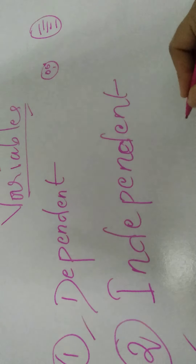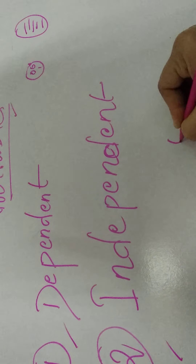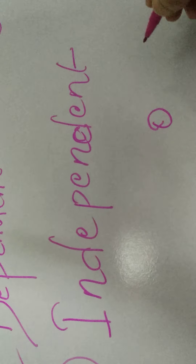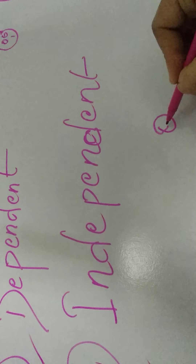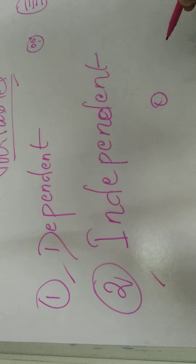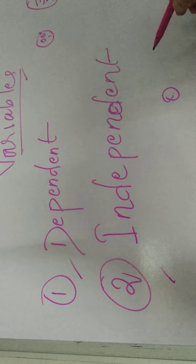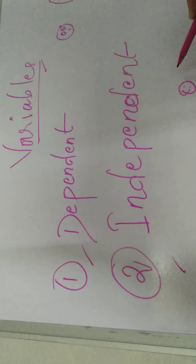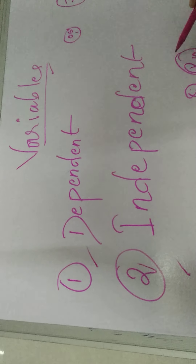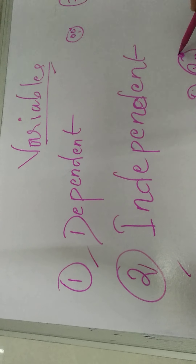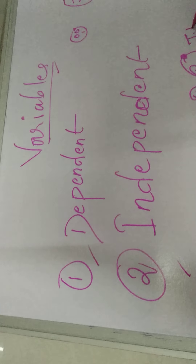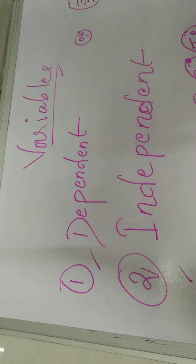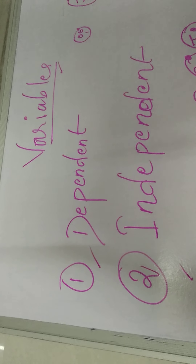Variables are qualities that belong to someone or something. For example, this is an MSN nursing student. Any student, like Rupali — the knowledge of Rupali regarding tuberculosis, how much knowledge does Rupali have about TB? That is the dependent variable.